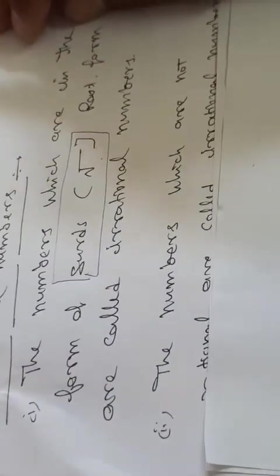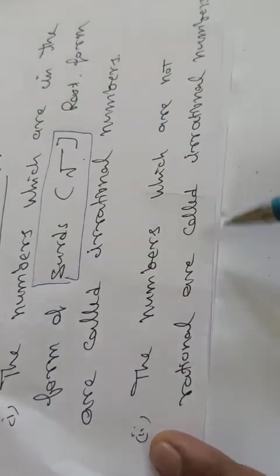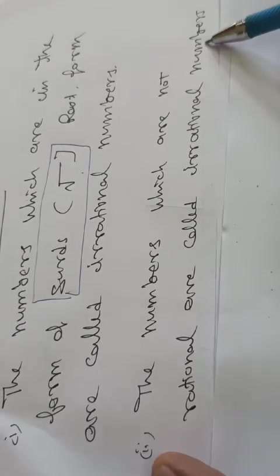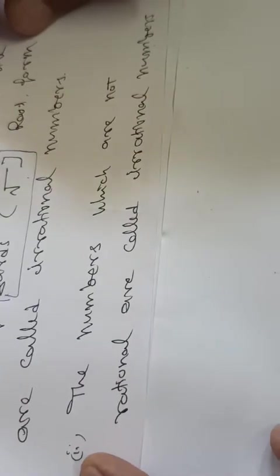Another definition is that the numbers which are not rational are called irrational numbers. Jo number rational nahin hootay hain, unko hum irrational number kahte hain.